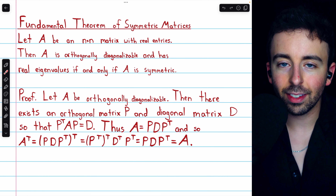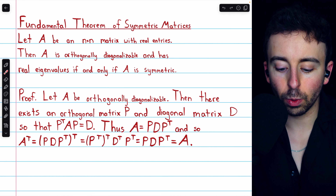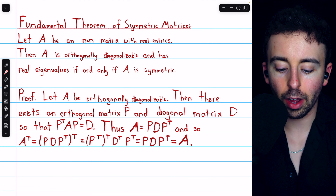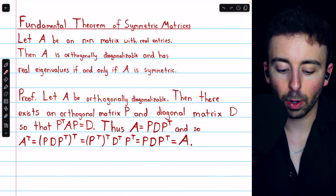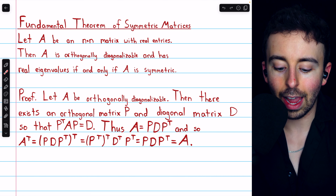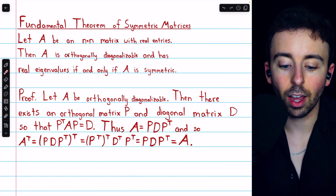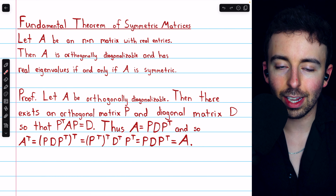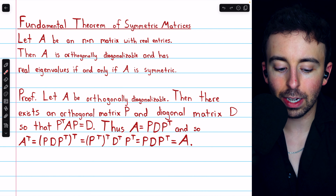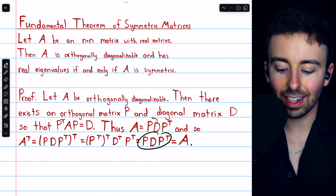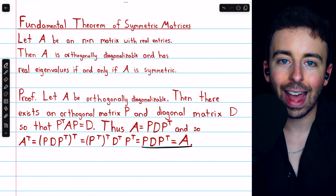Now we take the transpose of A equals PDP transpose and show it doesn't change A, proving A is symmetric. A transpose equals the transpose of PDP transpose. The transpose of a product is found by reversing the order and transposing each factor: P transpose transpose, D transpose, and P transpose. P transpose transpose is just P; D transpose is just D since the transpose of a diagonal matrix doesn't change it; and P transpose is P transpose. So A transpose equals PDP transpose, which is just A. We took the transpose of A and got A back, so A is symmetric.